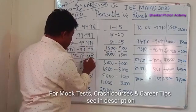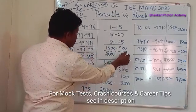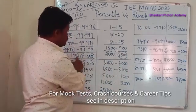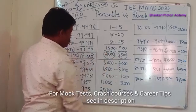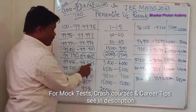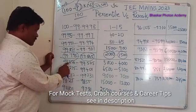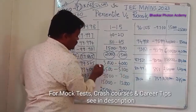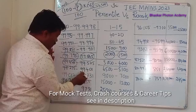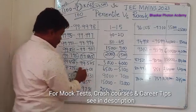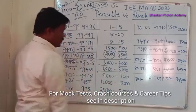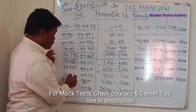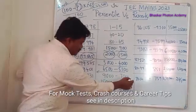A percentile of 99.845, being higher, corresponds to rank around 1500, while 99.795, being lower, corresponds to rank around 2000. Percentile range 99.575 to 99.456 gives ranks approximately 4000 to 5000. Percentile range 99.401 to 99.275 gives ranks approximately 5000 to 6500. Percentile range 99.23 to 99.0 corresponds to ranks approximately 7000 to 9000.